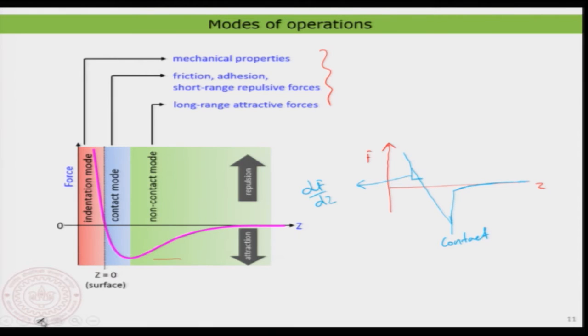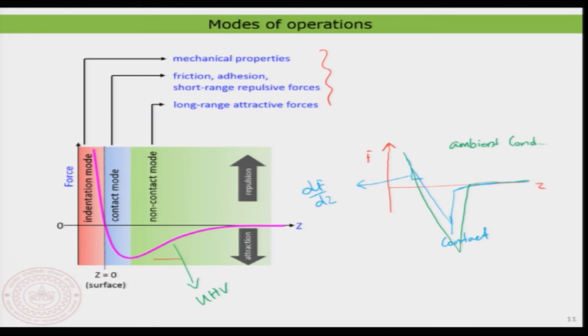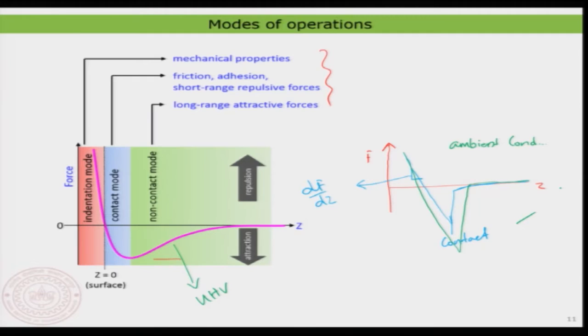When you retract, it is not necessary that you go along the same path. Because of a strong adhesive force, it may follow a slightly different path. This so-called huge dip corresponds to the adhesive force between the tip and the surface. In ambient conditions, this is what you would commonly observe, whereas the idealized Lennard-Jones-type curve is applicable in ultra-high vacuum where there is no medium between the two atoms.